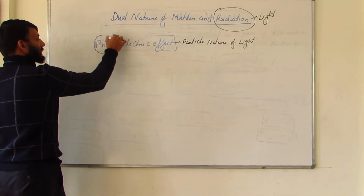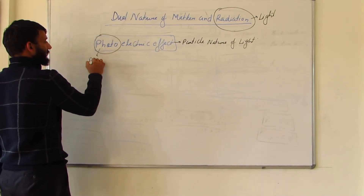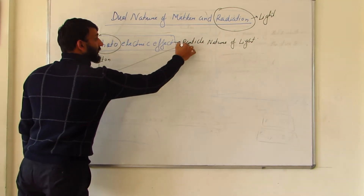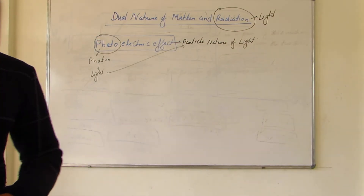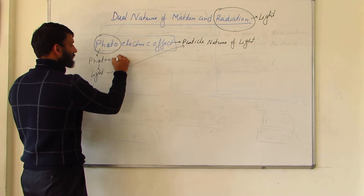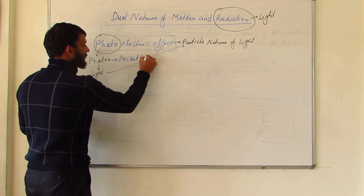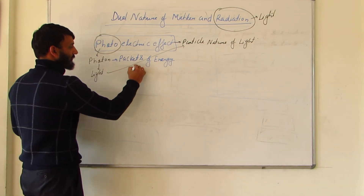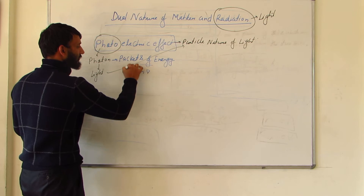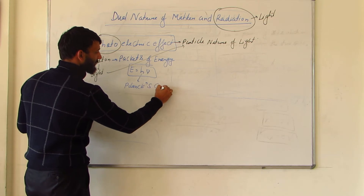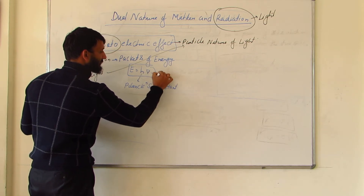The word 'photo' relates to photon, which is related to light — specifically the particle nature of light. When light travels as a particle, it travels in the form of small packets of energy known as photons. Each photon has an energy given by E = hν, where h is Planck's constant and ν is the frequency.